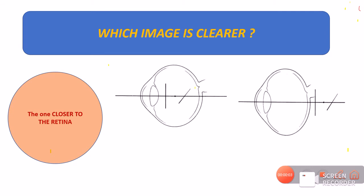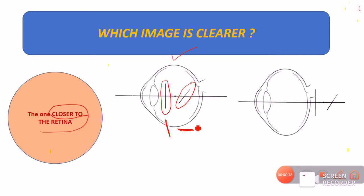The fourth concept: consider a patient with compound myopic astigmatism where both vertical and horizontal meridians are focusing in front of the retina. At the anterior focal line, the patient gets a vertical image, and at the posterior focal line, a horizontal image. The patient will see more clearly the image which is closer to the retina. Here, the horizontal image is more closer to the retina, so the patient sees the horizontal image more clearly. In another case, if the vertical image is closer to the retina, the patient will see the vertical image more clearly.